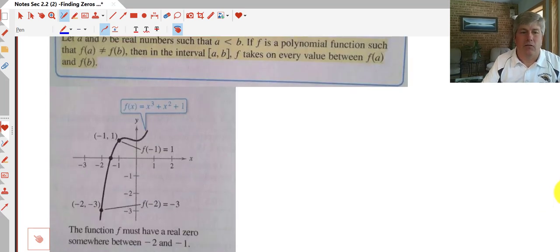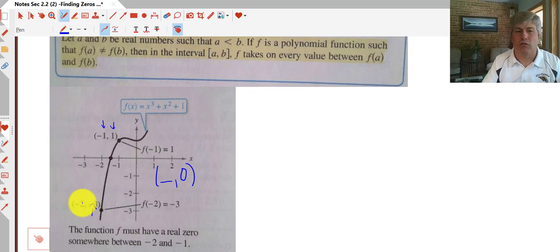So in this case, we have an ordered pair that f of negative two equals negative three. So we have a negative output and we have an ordered pair on the top here at (-1, 1). So that must mean that somewhere in between these two points, there is an x-intercept. There must be some value for x that creates a zero for y. So we know that our x-intercept is going to fall somewhere between negative one and negative two. So our zeros fall in between those two x-coordinates.